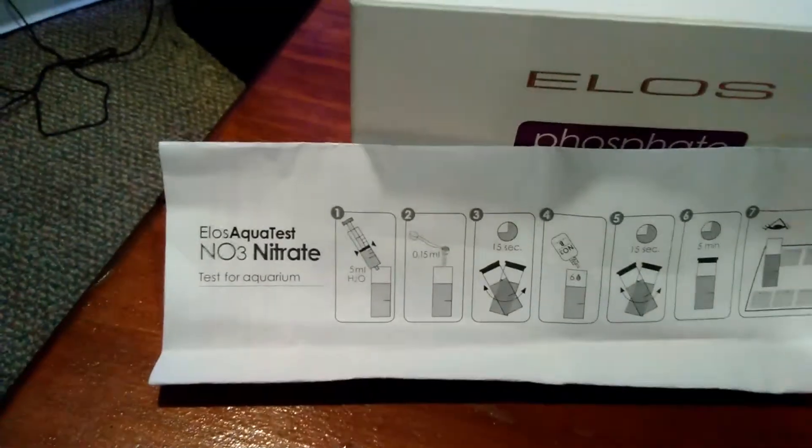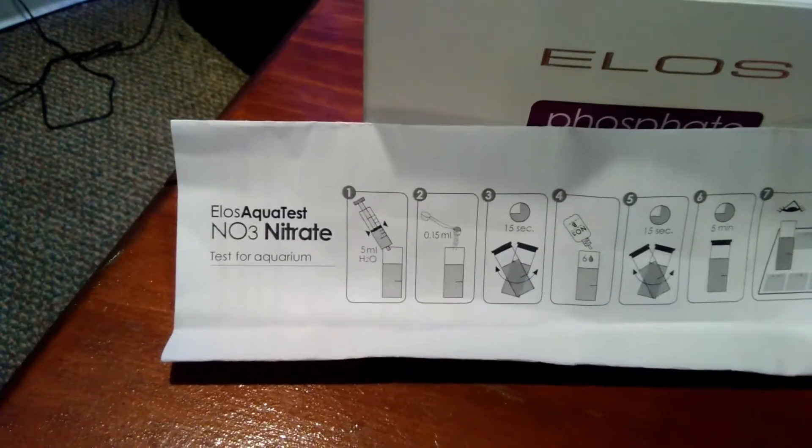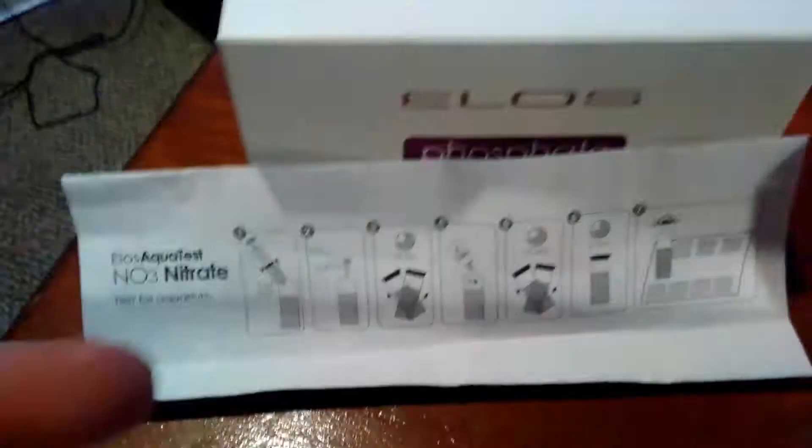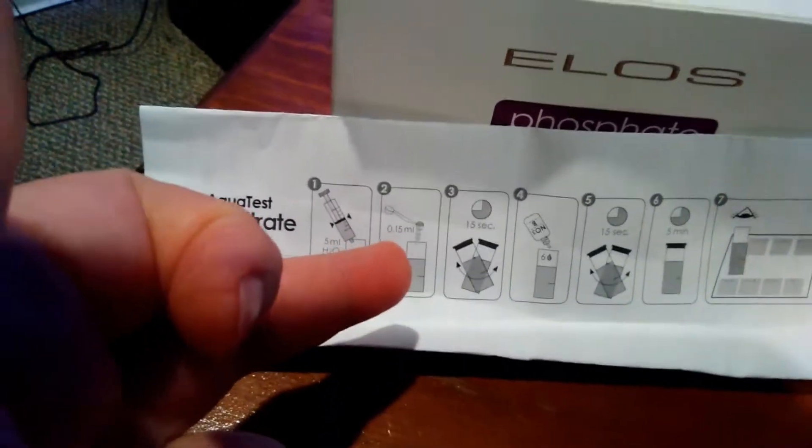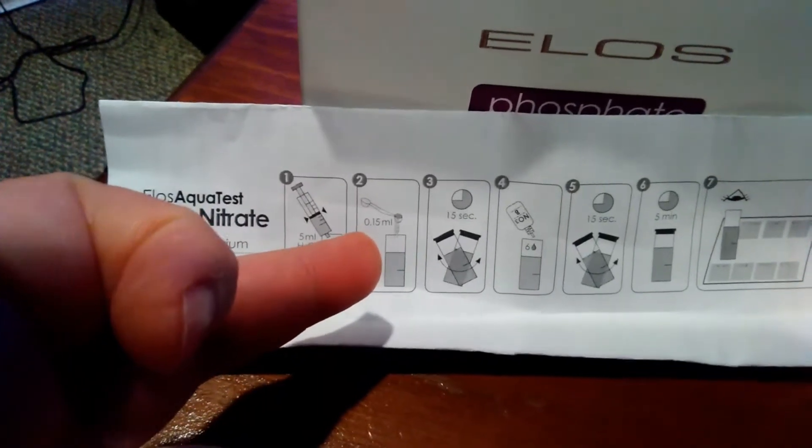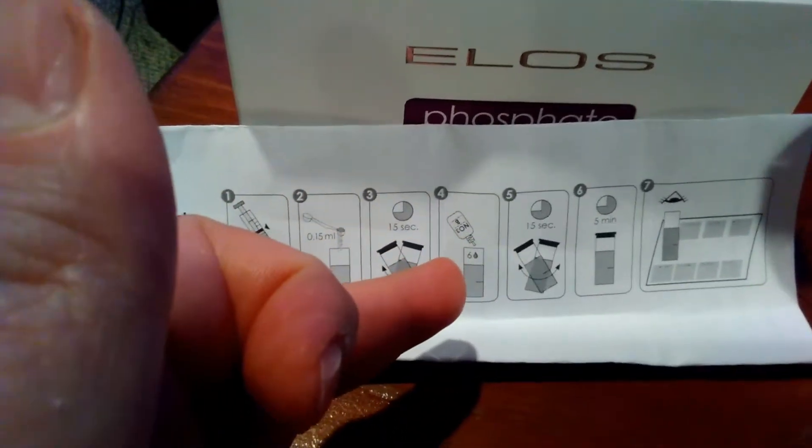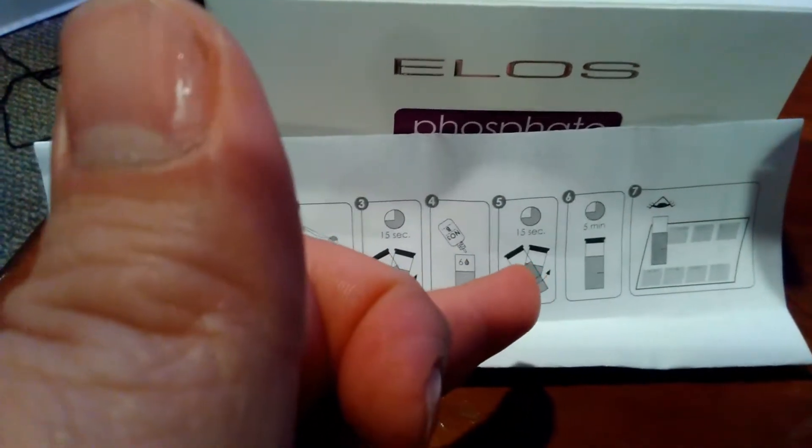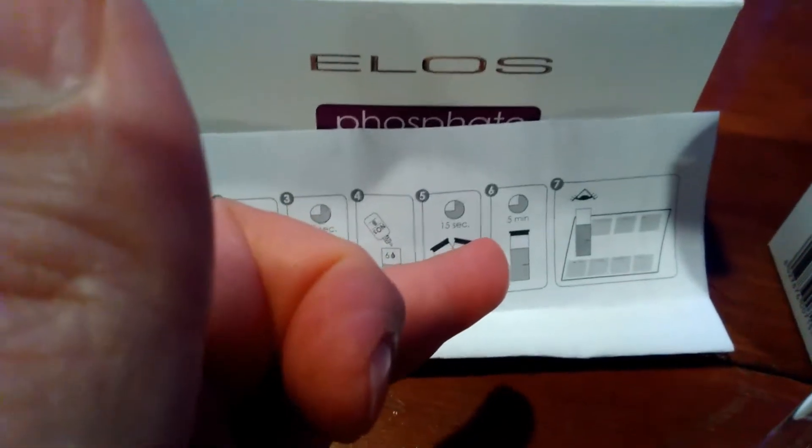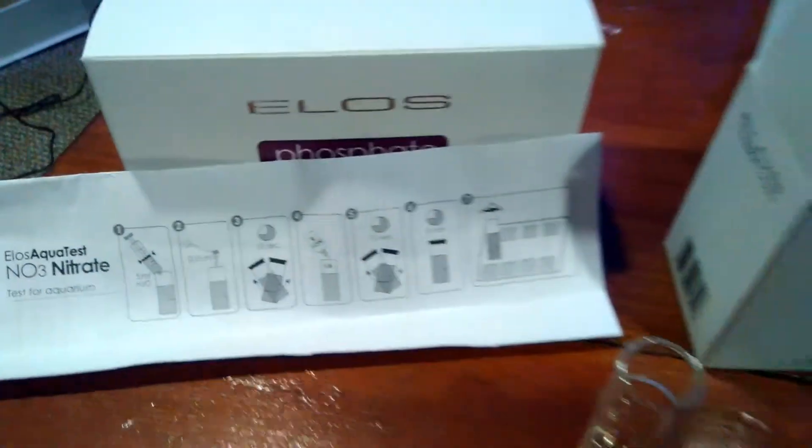Here's the instructions for it. You got your 5 milliliter syringe, 0.15 milliliter side of the spoon. Shake for 15 seconds, 6 drops, another 15 second shake, 5 minutes. Now you got your test.